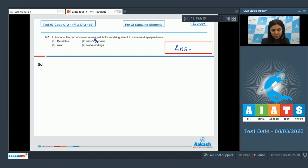Question 147: In humans, the part of a neuron responsible for receiving stimuli in a chemical synapse is or are dendrites, Nissl granules, axons, or nerve endings.